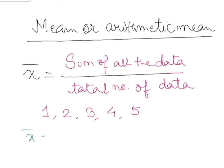So my mean will be X bar equals sum of the data, 1 plus 2 plus 3 plus 4 plus 5. How many data are there? There are five data.